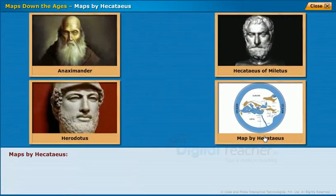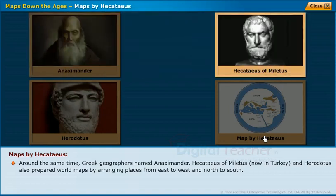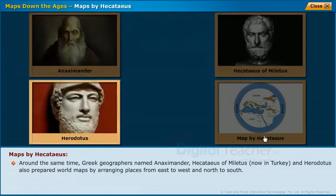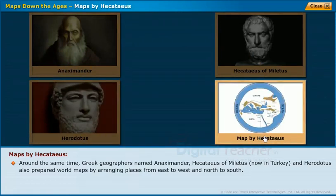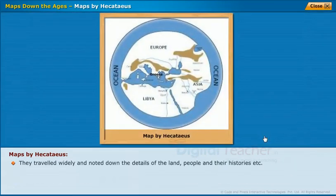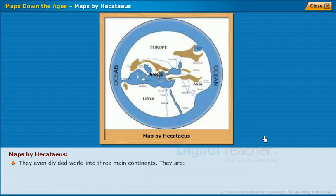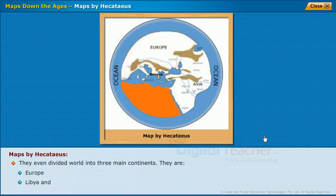Maps by Hecateus. Around the same time, Greek geographers named Anaximander, Hecateus of Miletus (now in Turkey), and Herodotus also prepared world maps by arranging places from east to west and north to south. Their ideas were similar to the Babylonians, who believed that the earth was a round disk surrounded by an ocean river. They traveled widely and noted down the details of the land, people, and their histories. Based on the details, they prepared maps and placed Greece in the middle. They even divided the world into three main continents: Europe, Libya, and Asia.